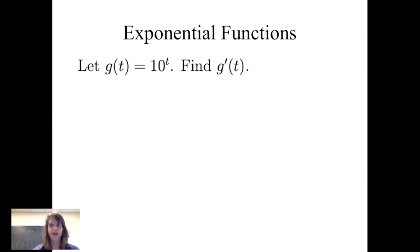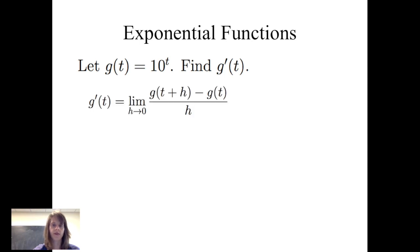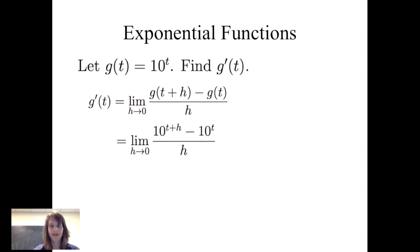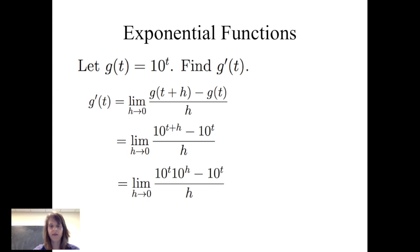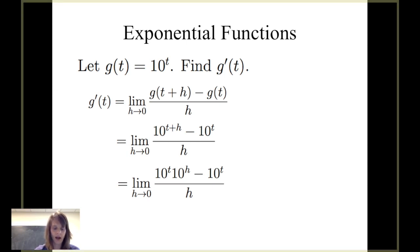We can also consider the derivative of exponential functions. As an example, let's consider g of t equals 10 to the t power. Let's look at the derivative of g with respect to t using the limit definition of a derivative. So the limit as h goes to 0 of g of t plus h minus g of t, all over h, is the limit as h goes to 0 of 10 to the t plus h minus 10 to the t, all over h. Using my rules of exponents, I can rewrite 10 to the t plus h as 10 to the t times 10 to the h. So then I can subtract off the 10 to the t, divide all of that by h, and take the limit as h goes to 0.